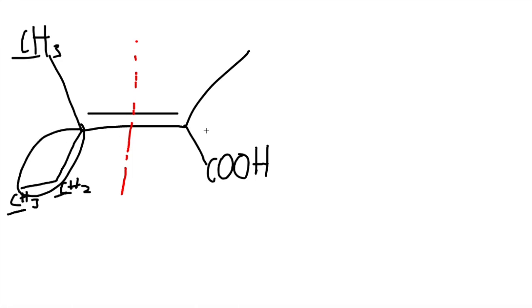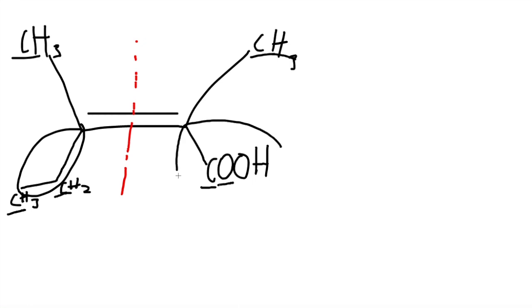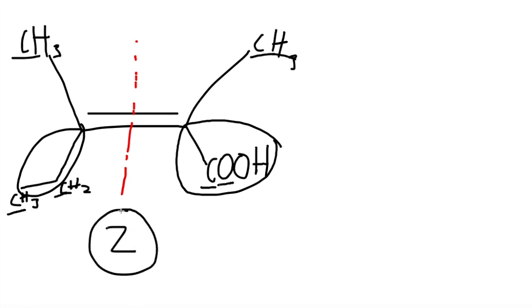On the right side we're comparing CH3 to COOH. The first carbons are the same, but then the oxygen in COOH is bigger than the methyl group, so that side gets selected. When the selected groups are on the same sides, it is called Z formation.